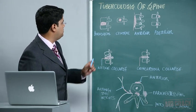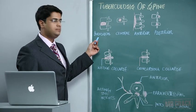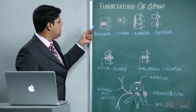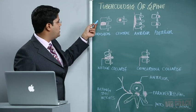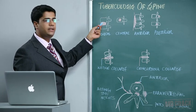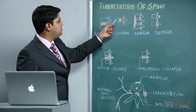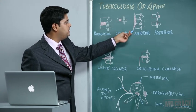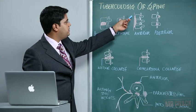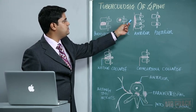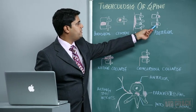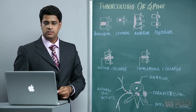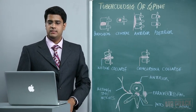The types of tuberculosis spine are very important. They are divided into paradiscal, central, anterior, and posterior. In the paradiscal type, adjacent vertebrae are affected — this is where tuberculosis gets embedded. The central type affects the central body of the vertebrae. The anterior type affects the anterior longitudinal ligament in front of the vertebral bodies. The posterior type affects the spinous process of the vertebrae.